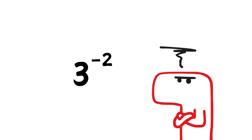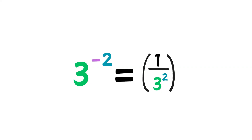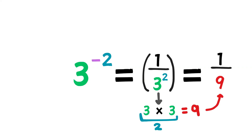How do we find powers with negative exponents? Here we have 3 to the power of negative 2. A negative exponent doesn't mean we multiply negatively — it means we take the reciprocal of the base. This would be the same as 1 over 3 to the power of 2. 3 to the power of 2 is 9, so this would be 1 over 9.